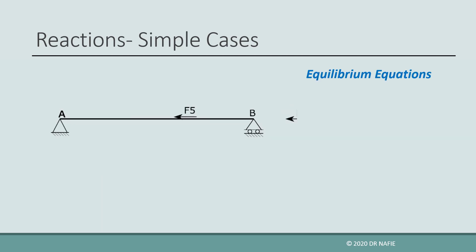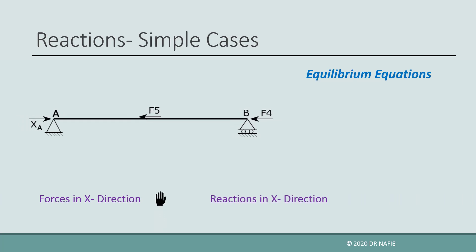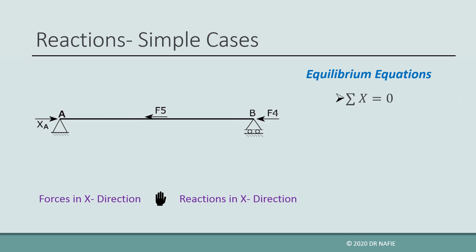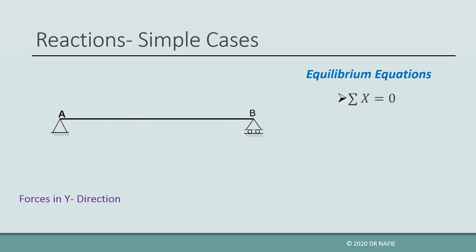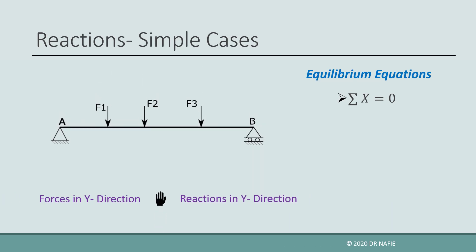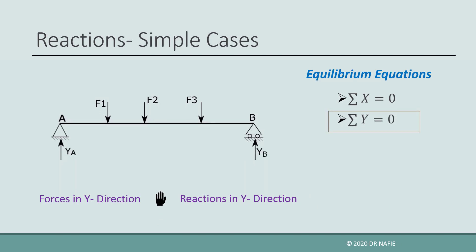To reach equilibrium, the forces in the horizontal direction should be balanced by reactions in the horizontal direction. So the sum of all forces and reactions in the horizontal direction should be zero. This is the first equilibrium equation, sigma x equals zero. Similarly, the same argument is valid for the forces and reactions in the vertical direction. This gives the second equation, sigma y equals zero.